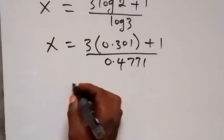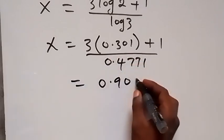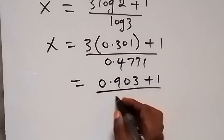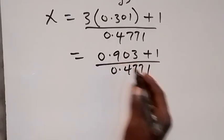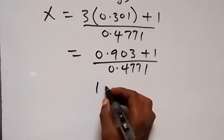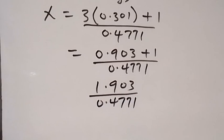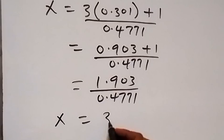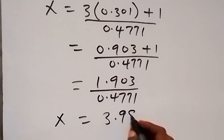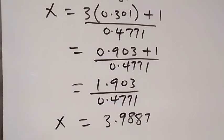When we multiply, 3 times 0.301 gives us 0.903, then plus 1 over 0.4771. We have 1.903 divided by 0.4771, and therefore x equals 3.9887.